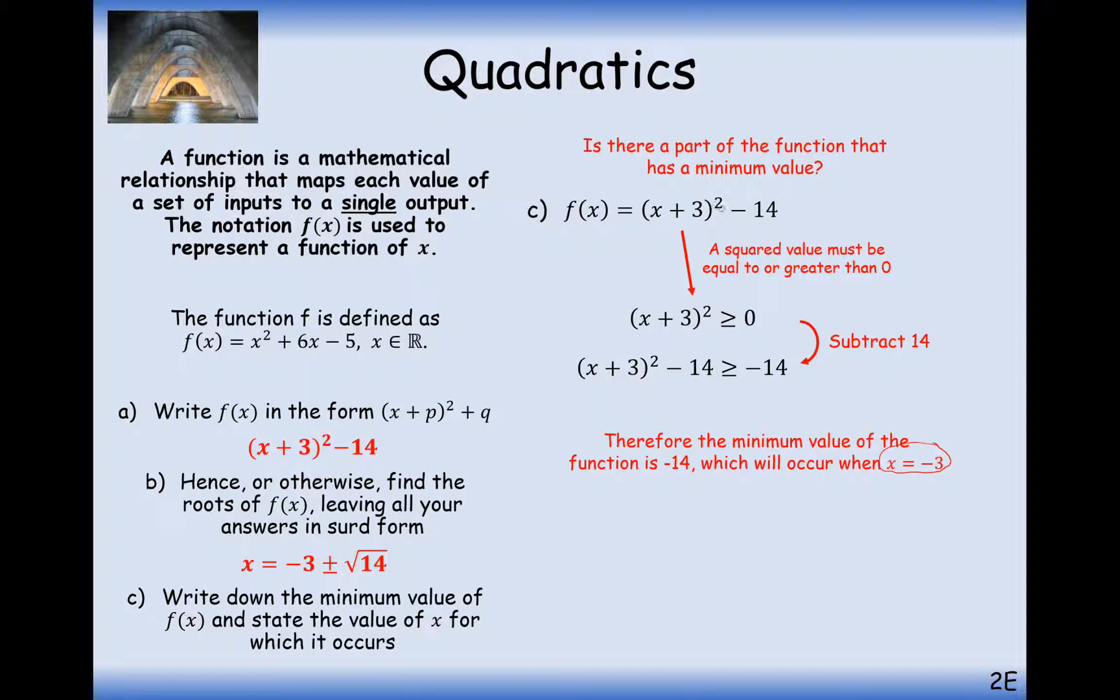So in which case x here is going to have to equal minus 3 to get this bracket equal to 0, and in which case that will cancel out this term here and make it a 0, in which case the minimum value of this function here is going to be minus 14. So for this expression here, the lowest output number that this could have is minus 14, and this happens when x is the number minus 3.